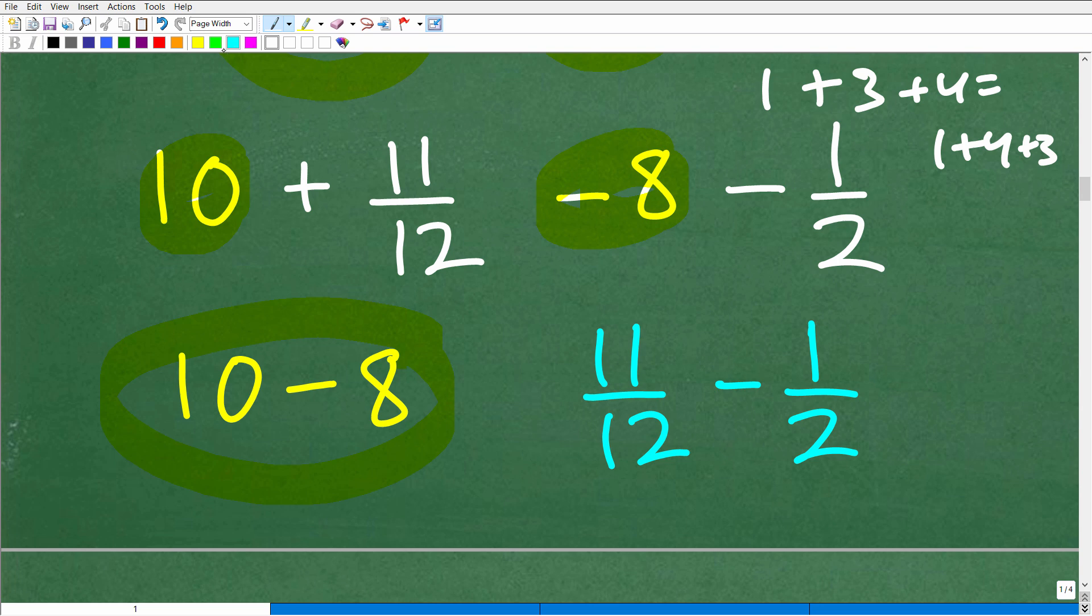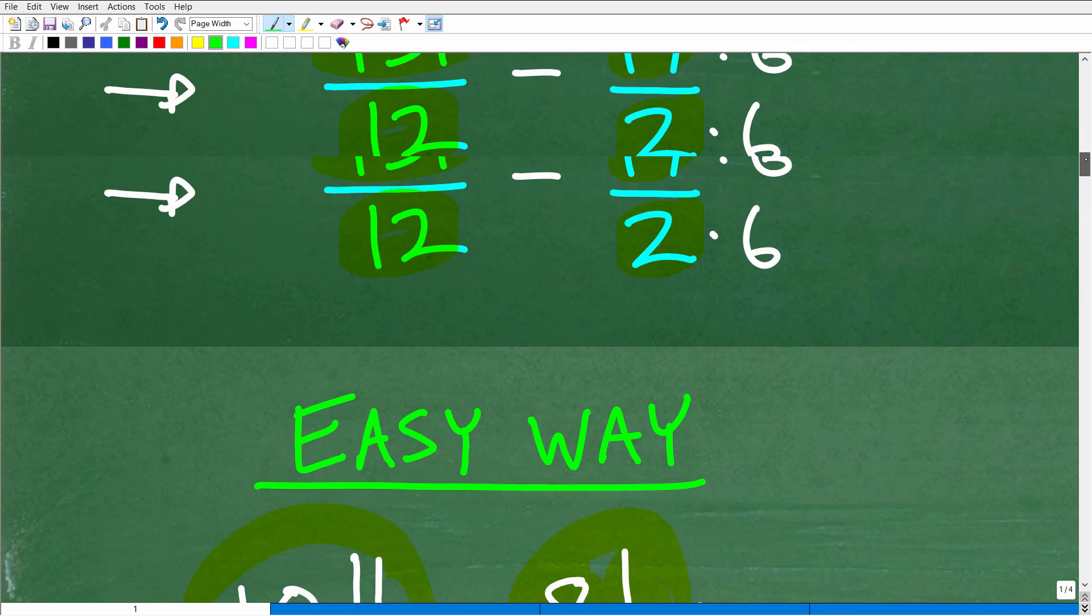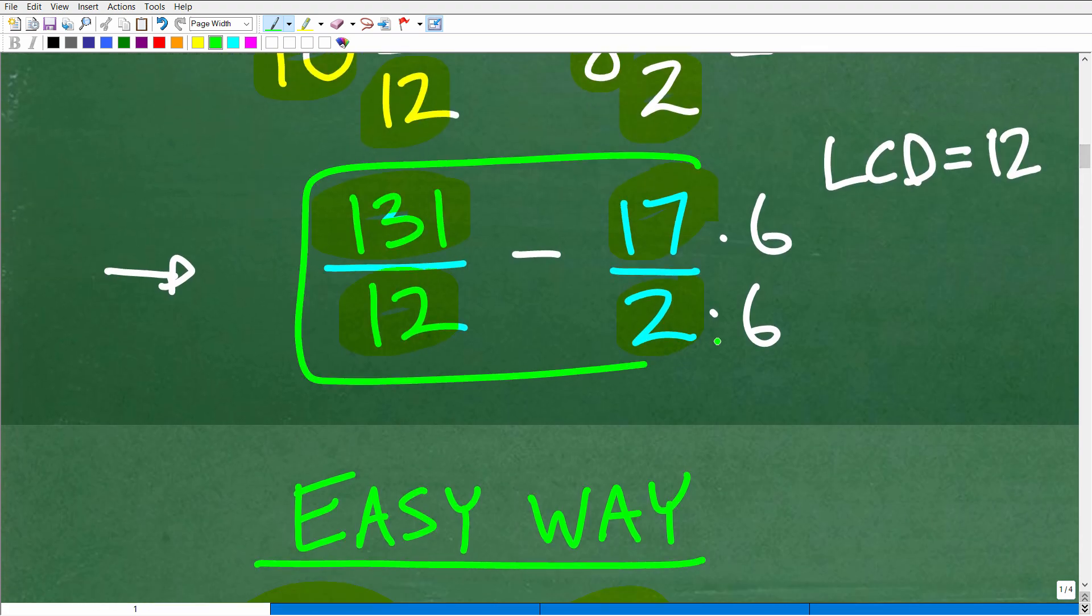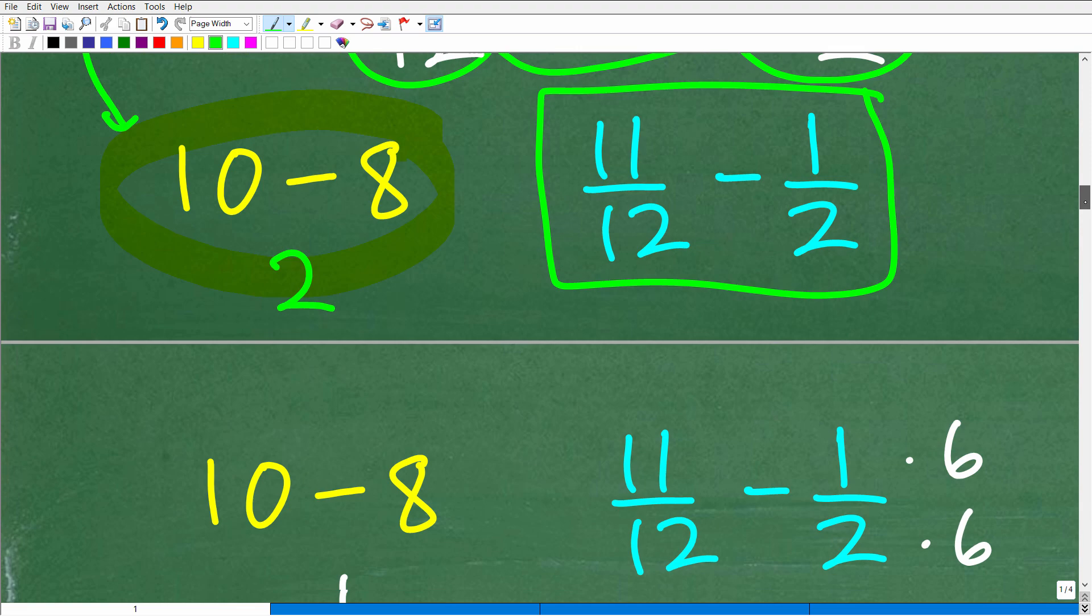But then what we can do we could take care of these two right here. Get the answer, of course we know it's going to be 2. And then what we really have to just concentrate on is 11 twelfths minus 1 half. So dealing with this fraction right here or this subtraction problem is much easier than to deal with this fraction problem here. Again we don't have a calculator, we don't want to use a calculator. So now let's go ahead and finish this problem up.